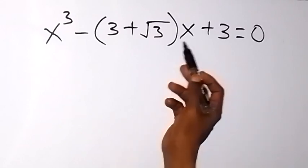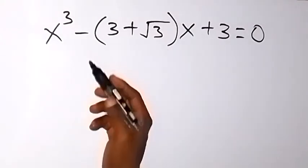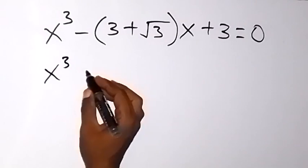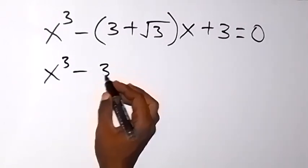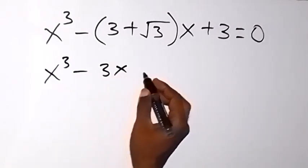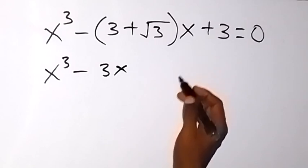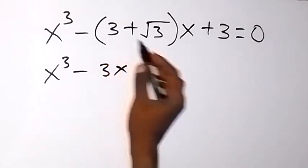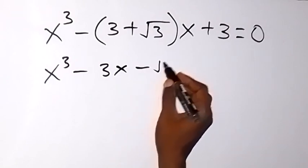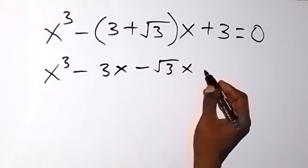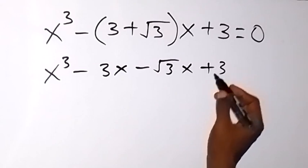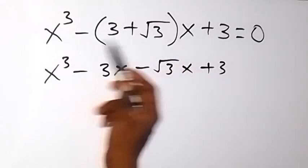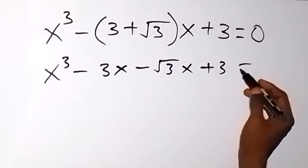From here, let's open this bracket with x. This becomes x raised to power 3, then minus 3x. We also have this minus — we multiply this bracket as well — so this becomes minus root 3x, then plus 3. So we open the bracket with x and this minus, which is equals to 0.